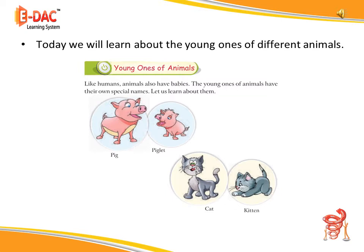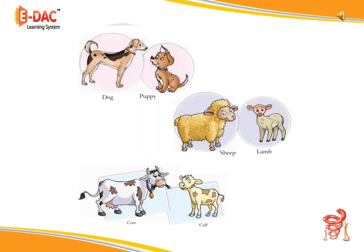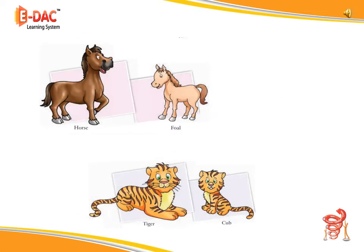Let us learn about them. Pig — piglet. Cat — kitten. Dog — puppy. Sheep — lamb. Cow — calf. Horse — foal. Tiger — cub.